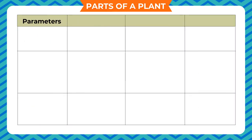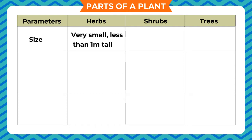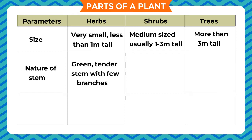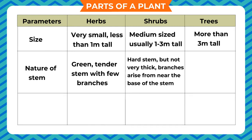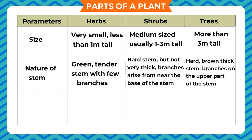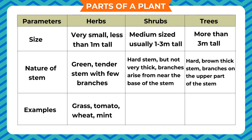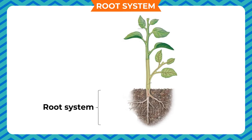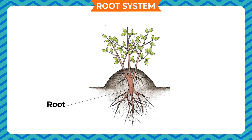Comparing herbs, shrubs, and trees: herbs are very small, less than one meter tall, with a green tender stem and few branches. Shrubs are medium-sized, usually one to three meters tall, with a hard stem and branches arising from near the base. Trees are more than three meters tall, with a hard brown thick stem and branches on the upper part. Examples — herbs: grass, tomato, wheat, mint; shrubs: hibiscus, lemon rose, pomegranate; trees: gulmohar, neem, peepal, mango.